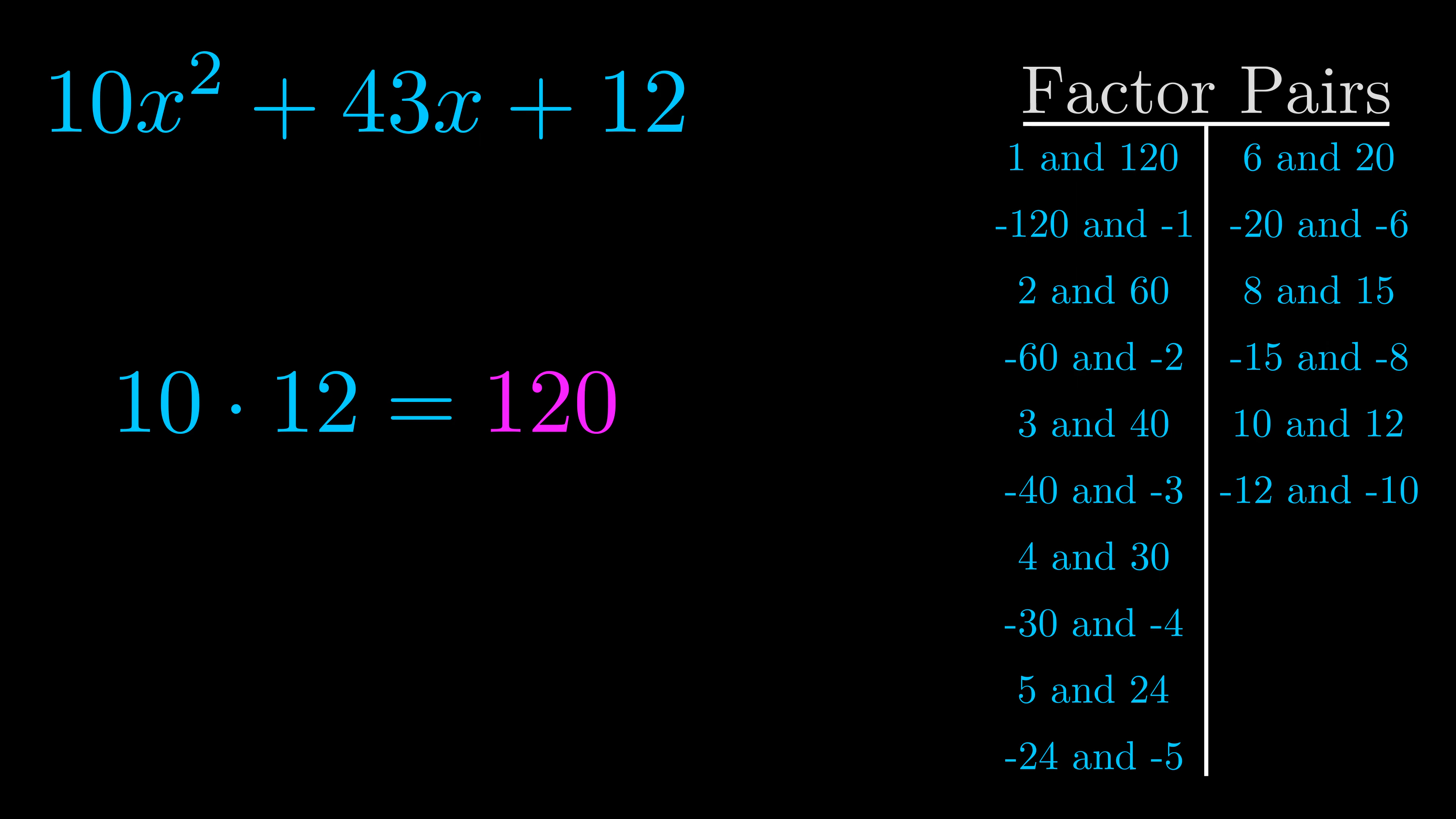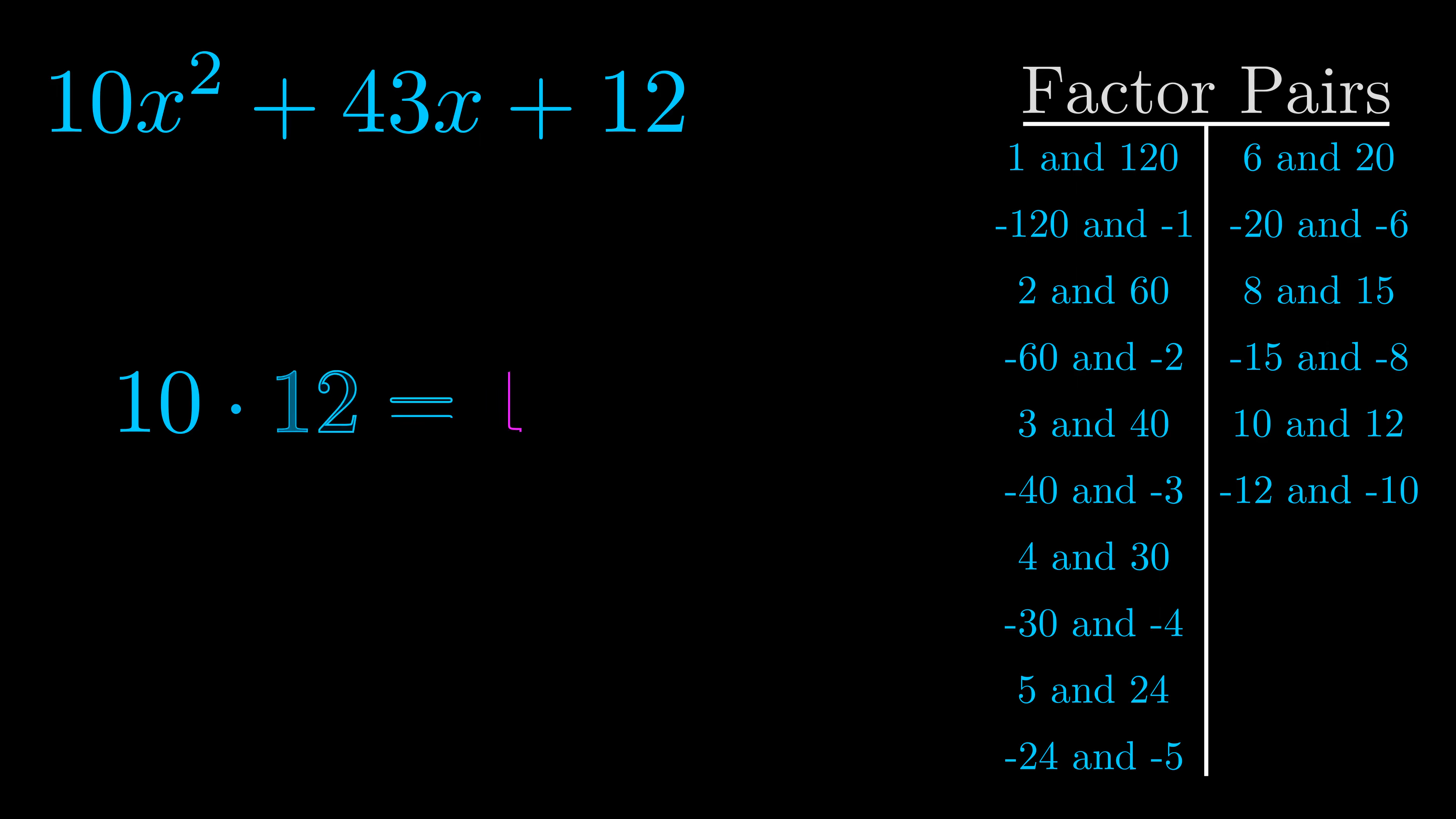Now once you have these factor pairs the goal is to find which of these pairs adds to the b value. The b value is the coefficient on the x term. That's the middle term, the one that we haven't done anything with yet.